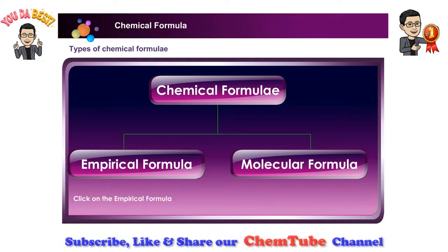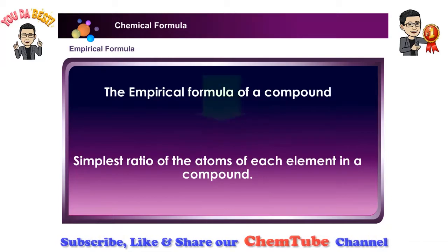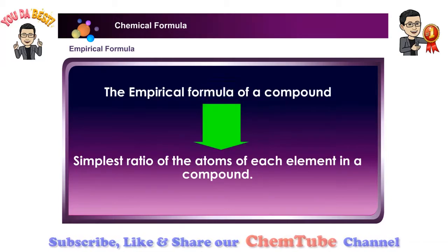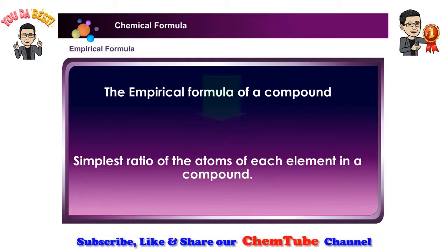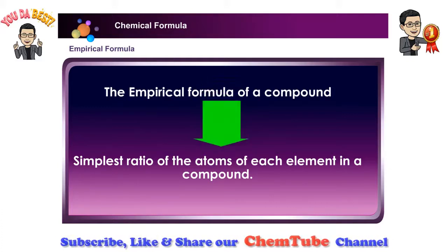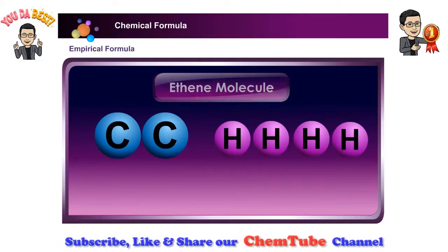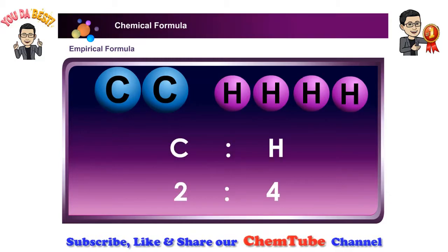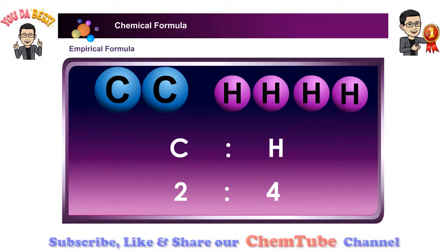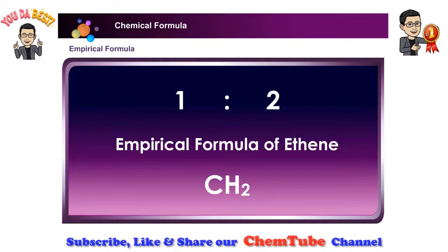Click on Empirical formula. The empirical formula of a compound is the chemical formula which shows the simplest ratio of the atoms of each element in a compound. For example, an ethane molecule consists of two carbon atoms and four hydrogen atoms. The ratio of carbon to hydrogen is 2 to 4, so the simplest ratio is 1 to 2. Therefore, the empirical formula of ethane is CH2.